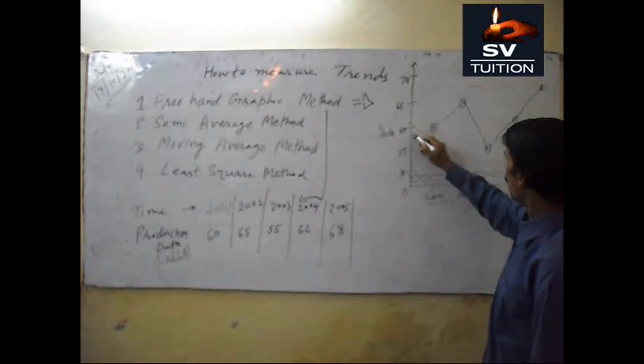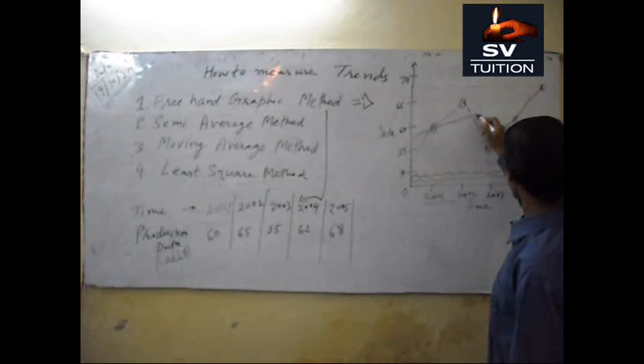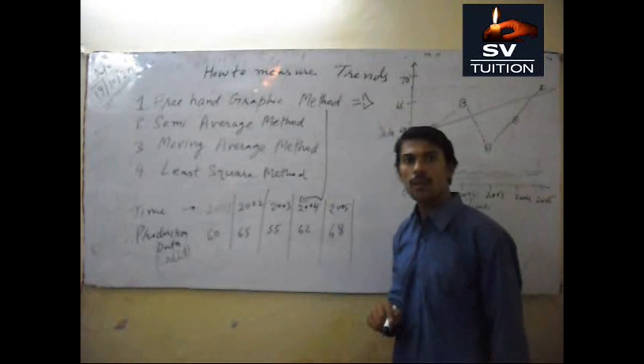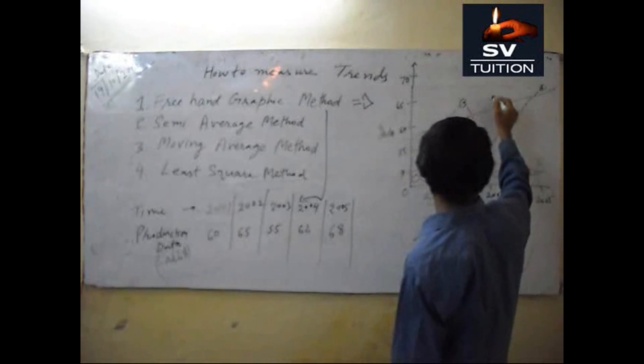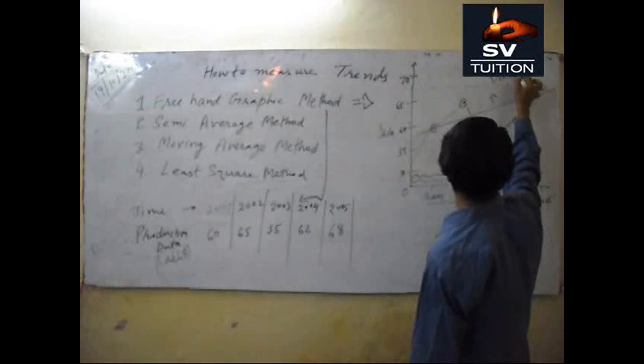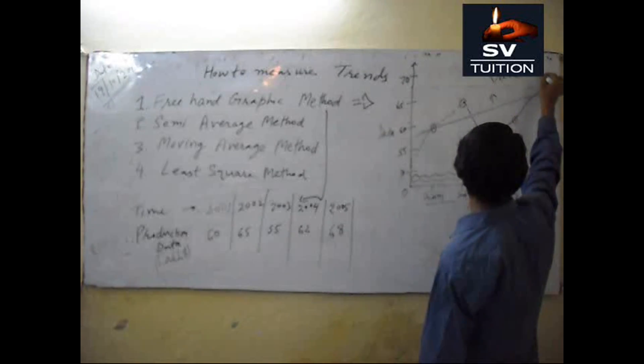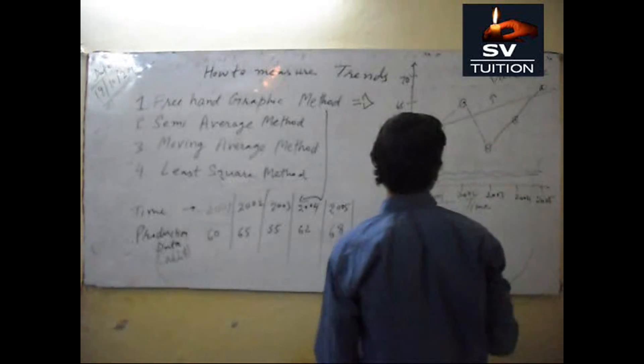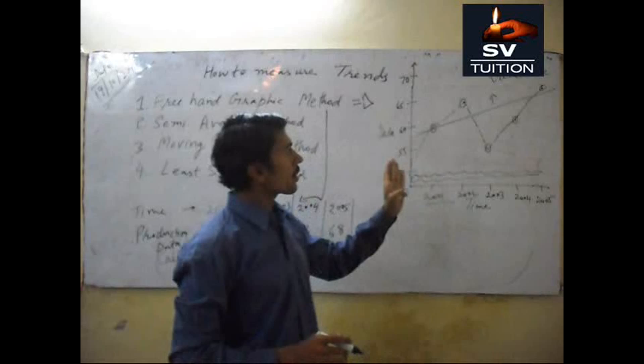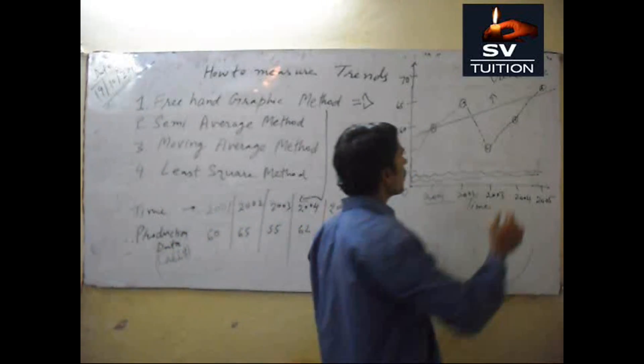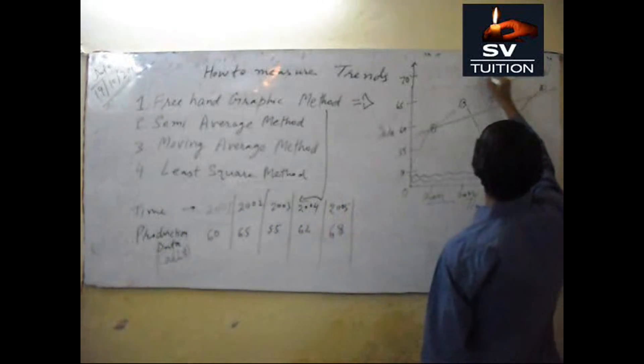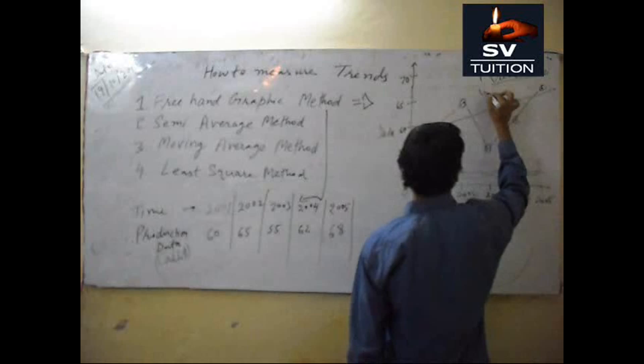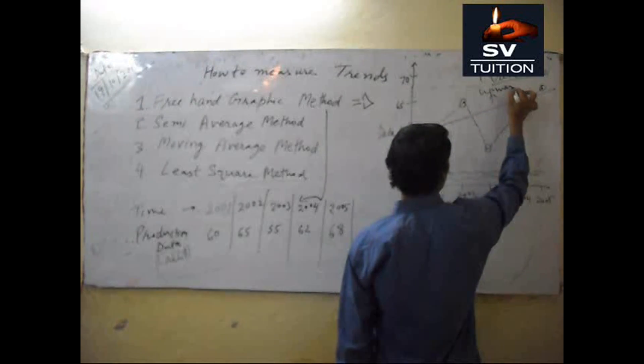Now, we take a line, this is called trend line. From this we are seeing the trend, upward trend.